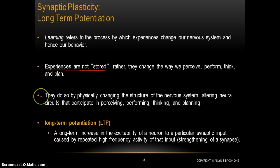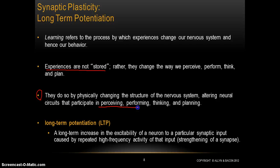What we know about memory is that changes in behavior due to experience reflect an actual physical, physiological, structural change in the brain and nervous system, altering neural circuits that participate in perceiving, performing, thinking, and planning. What's really happening when a memory is formed is that there's an actual structural change happening in the brain that is literally causing you to perceive and think in a way that is different from the way you did prior to that experience.